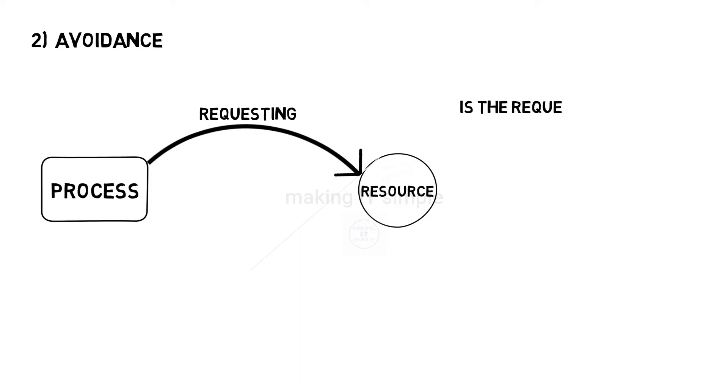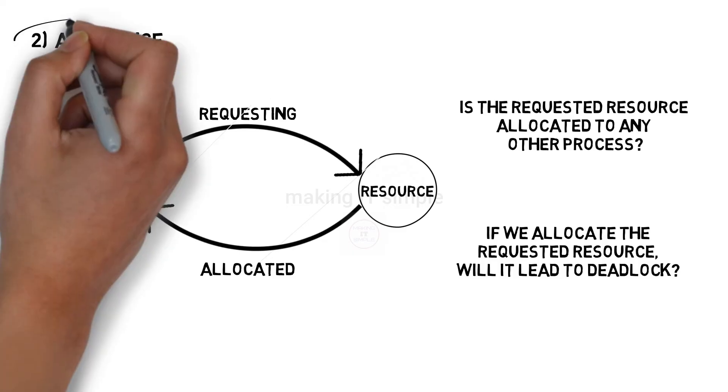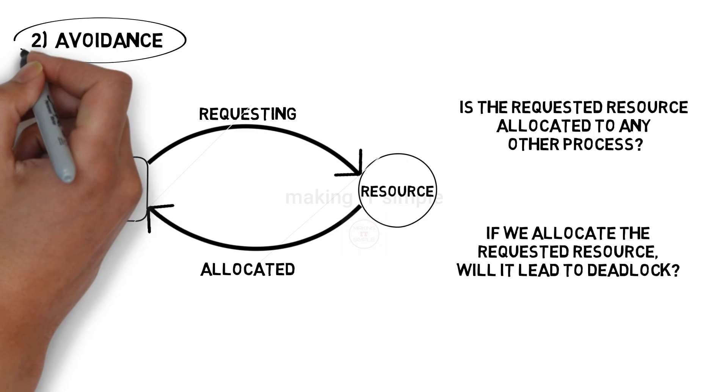In operating system this approach is used as follows. When any process or program is requesting a resource during runtime, it is checked whether the resource is allocated to another process, or if we allocate the resource will there be a deadlock situation. If there is no problem then the resource is allocated. So at runtime, that is at the last moment, the deadlock situation is avoided.